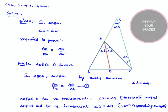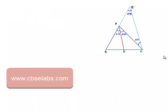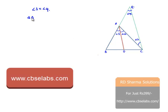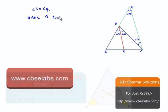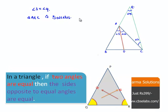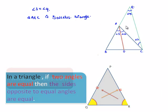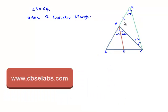As we got that angle 3 is equal to angle 4, we can say that triangle AEC is an isosceles triangle. In an isosceles triangle, the sides opposite to equal angles will be equal, therefore here we can say that AE is equal to AC.